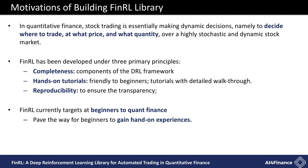Our motivation. In Quant Finance, stock trading is essentially making dynamic decisions, namely to decide where to trade, at what price, and what quantity, over a highly stochastic and dynamic stock market. Taking many complex financial factors into account, DRL trading agents build a multi-factor model and provide algorithmic trading strategies, which are challenging for human traders.